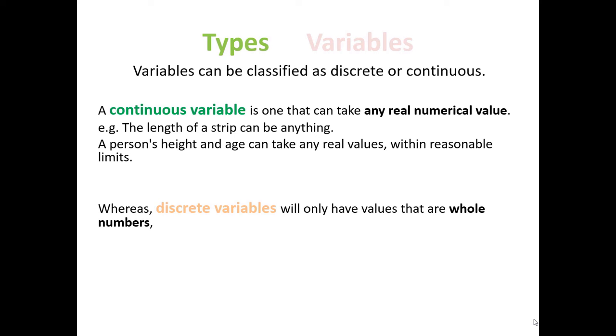A discrete variable will only have values that are whole numbers. So for example, you have 10 people on a football team or five people on a football team, you can't have five and a half people on a football team.